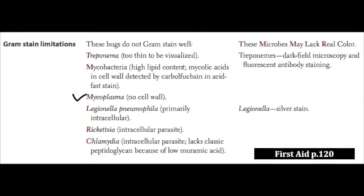For example, mycoplasma — specifically mycoplasma pneumoniae — or its distantly related cousin, ureaplasma. These bugs actually have sterols in their cell membrane. It's important to know that most bacteria do not have sterols like we do, and they also do not have a cell wall.